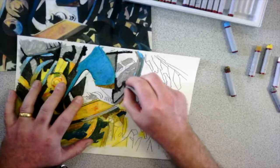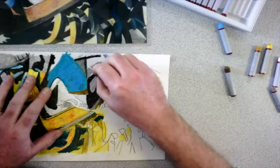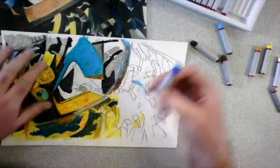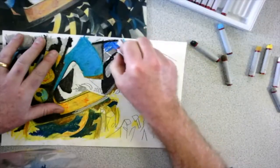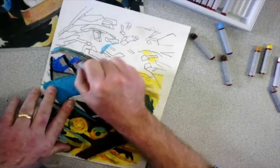You can see now using the black to redraw some of those shapes as well, and the strong contrast that you see in Anna Held Audet's work is what really I'm trying to replicate here.